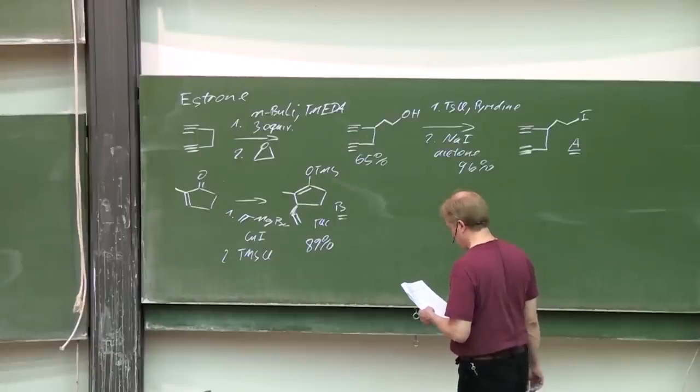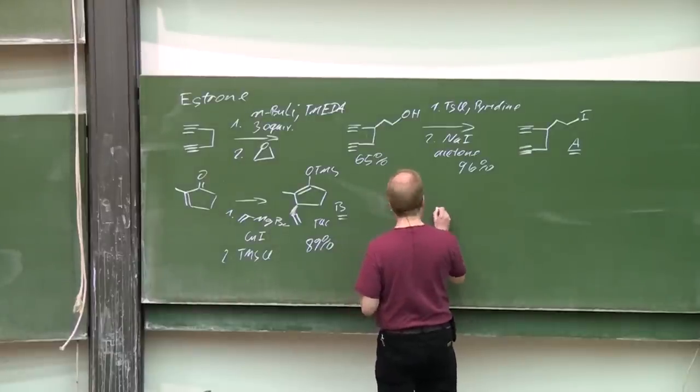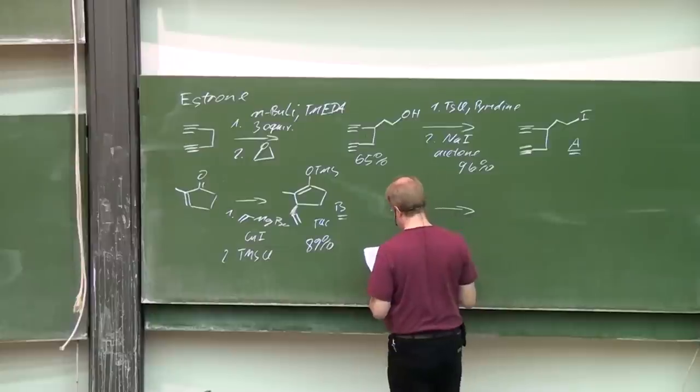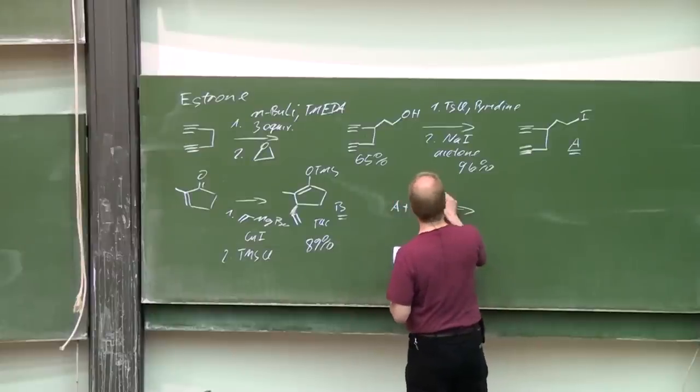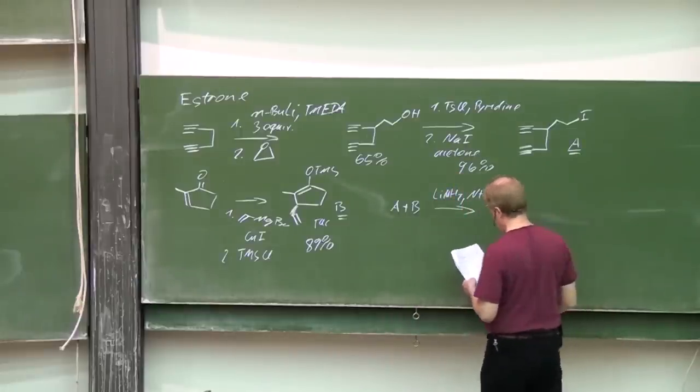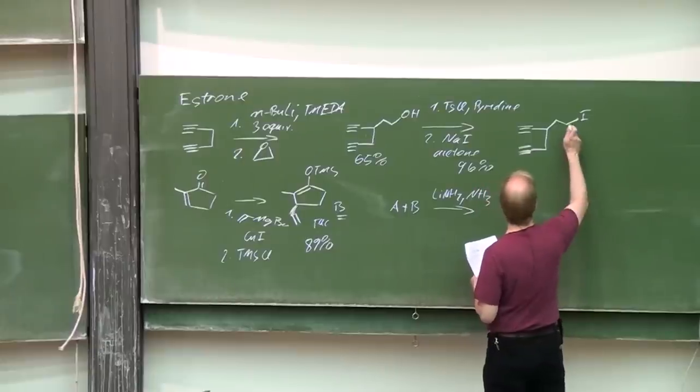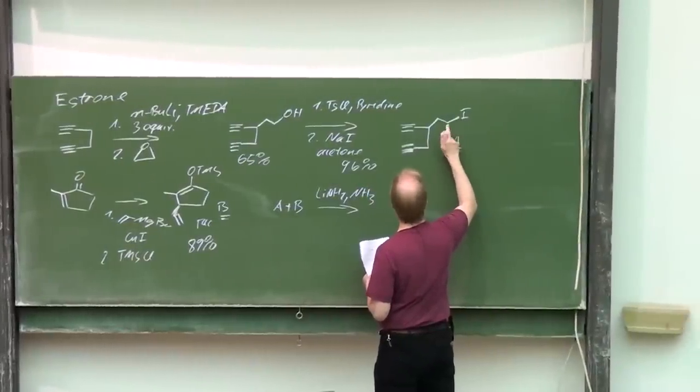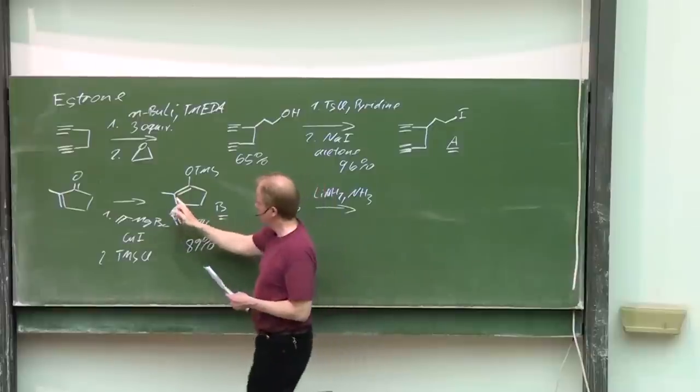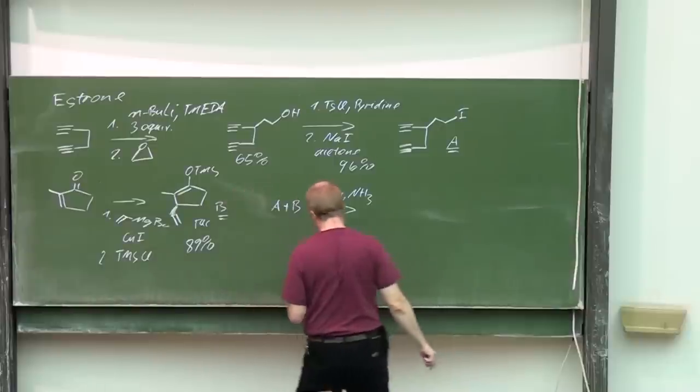Putting A and B together with lithium amide in liquid, therefore cooled ammonia, gave then the nucleophilic substitution and C-C bond formation between that electrophilic carbon and this nucleophilic carbon.